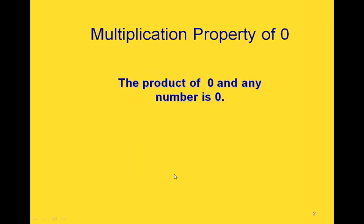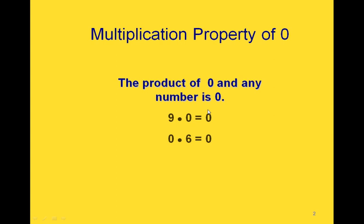The first property of multiplication we're going to talk about is the multiplication property of 0, and this says that the product of 0 and any other number is 0. For example, if we multiply 9 times 0, we get 0. And if we multiply 0 times 6, we get 0.